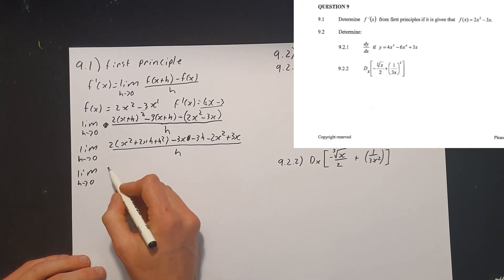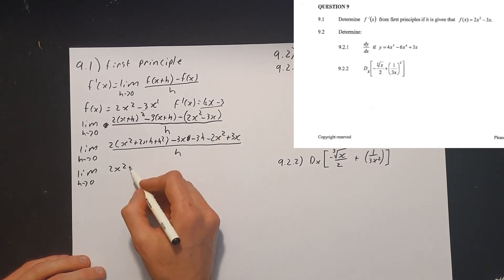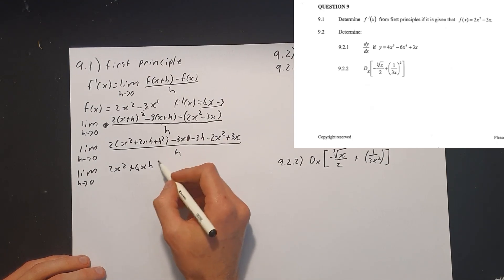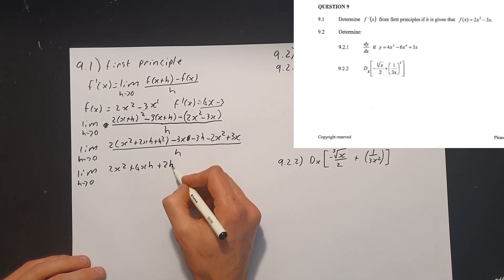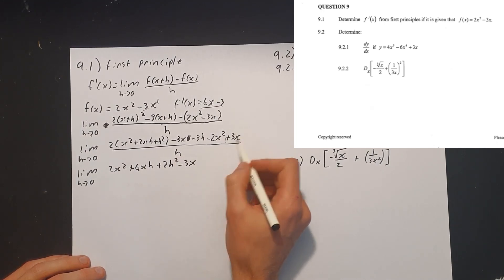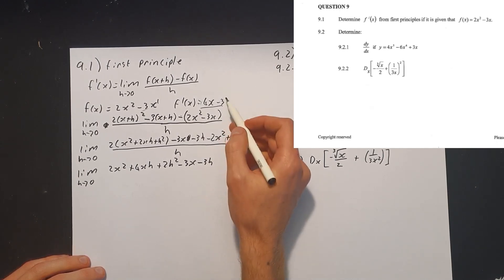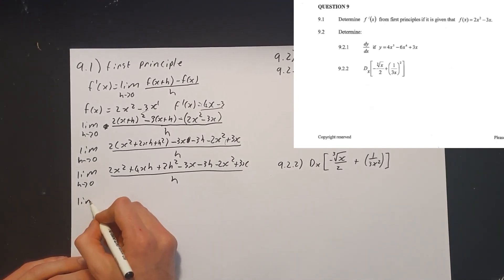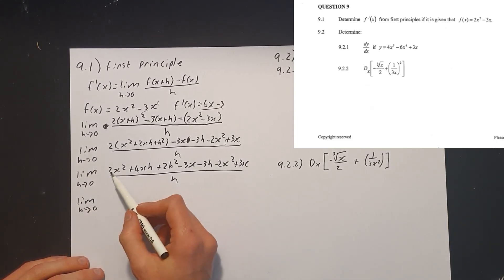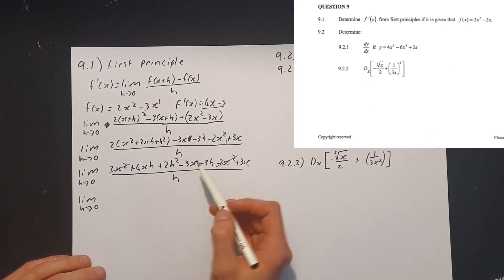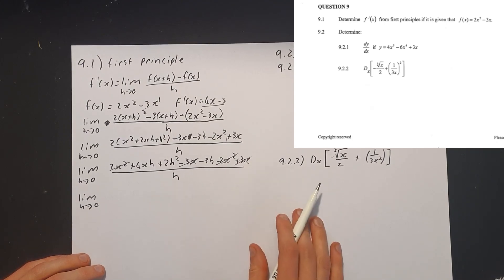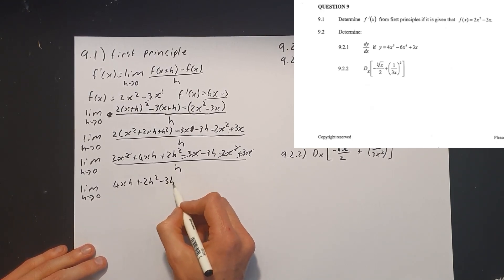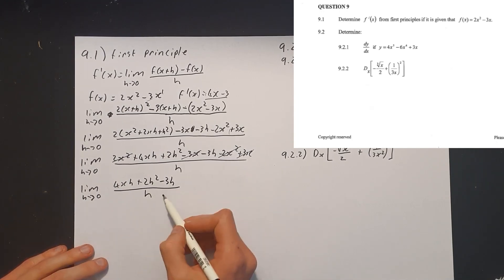Now looking at what we have: the limit as h tends to 0 of 2x squared — there it is — plus 4xh, and we're starting to head in the right direction because we needed a 4x somewhere, plus 2h squared minus 3x, which looks familiar, minus 3h, also looking familiar, minus 2x squared plus 3x, all over h. We can see 2x squared cancels with minus 2x squared, and minus 3x cancels with plus 3x. So we're left with 4xh plus 2h squared minus 3h, all over h.